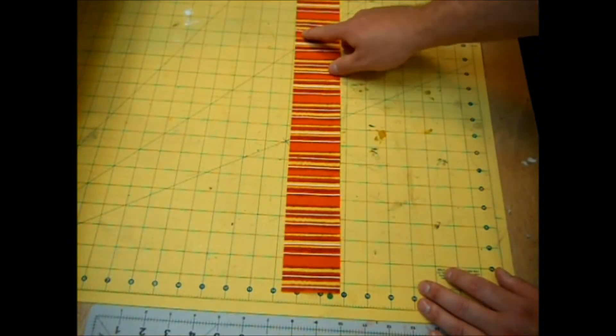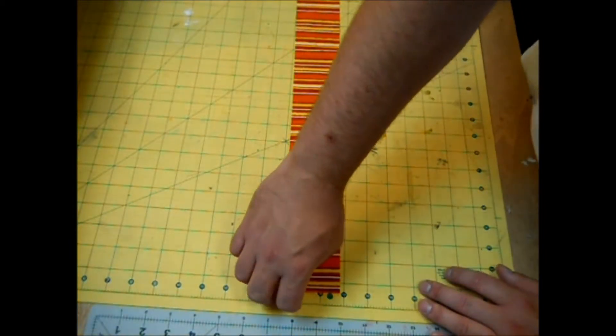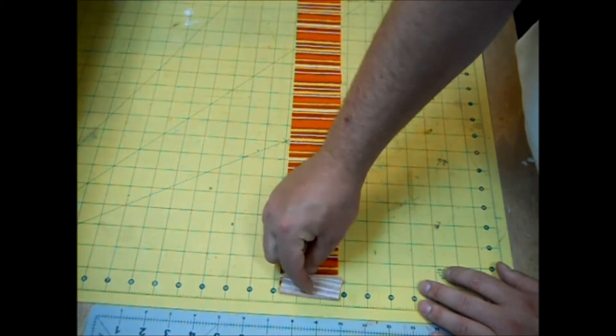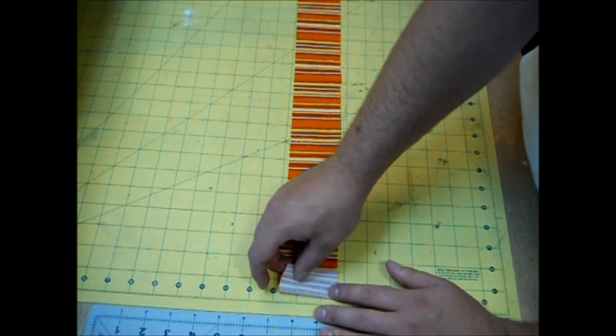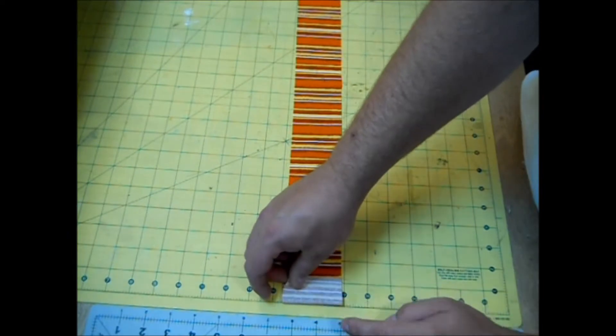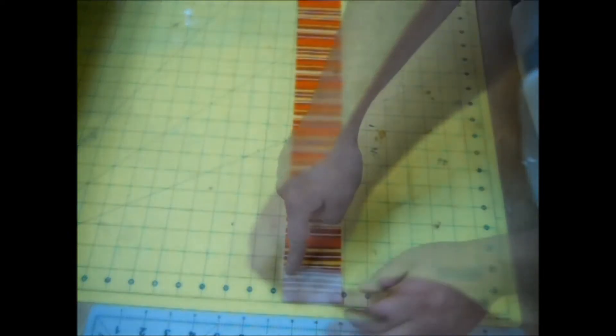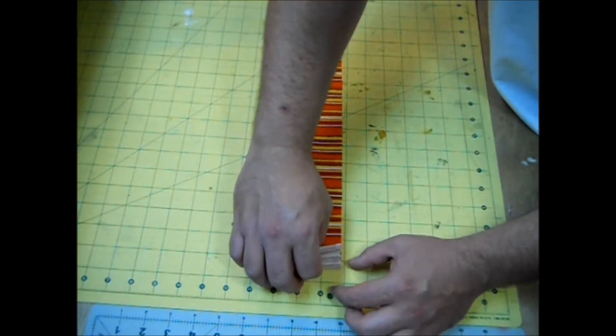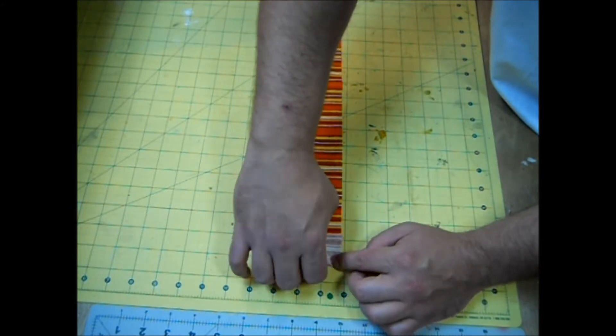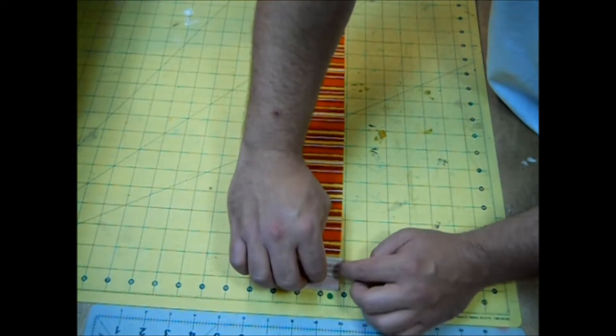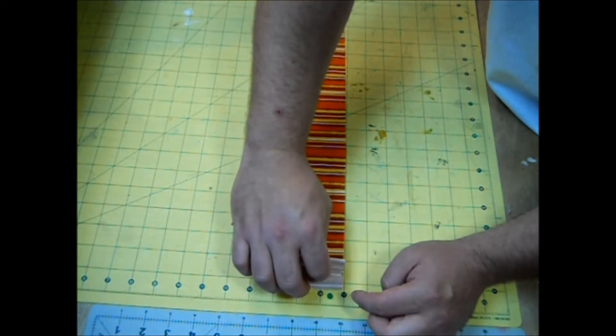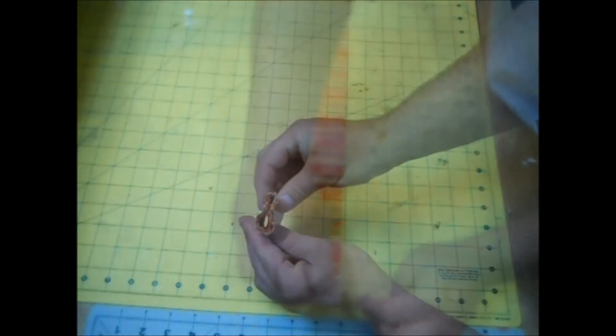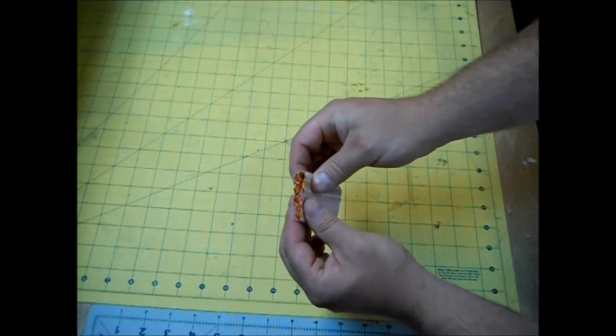So the next thing that we're going to do is roll this up into a little rectangle. I'm going to make my first fold about an inch and a half wide. Now continue to roll this all the way up. Just like that. You should have a little fabric sushi roll.